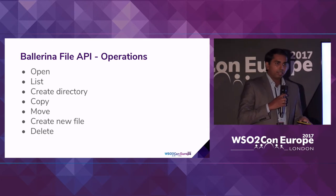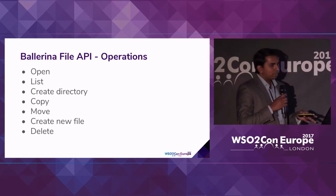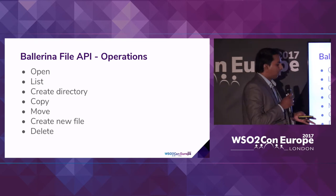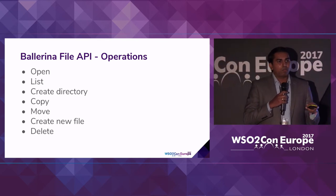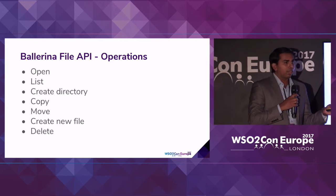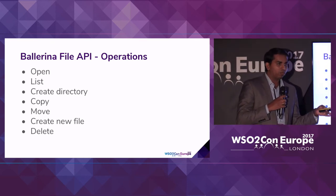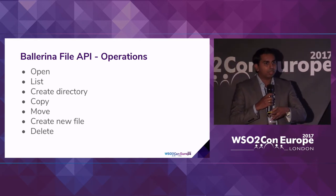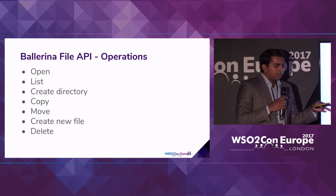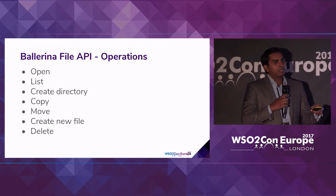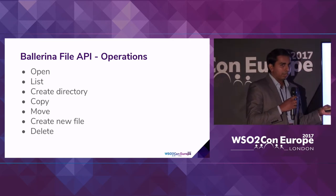If you take the Ballerina file API, we have two levels of access to files. The first level is the coarse-grained level — like you need to open a file, create a new file, or see what files are available in a particular directory. We provide this coarse-grained file accessing API in Ballerina.